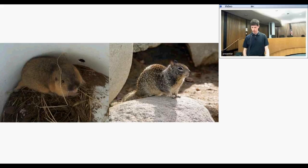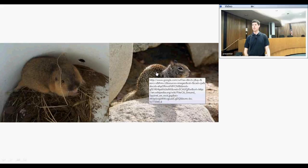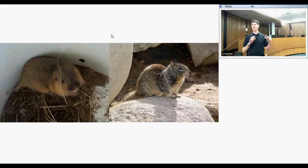Two species that the California tiger salamander simply can't live without: if you look at the forelimbs of the salamander, you'll see they're not modified in any way for digging. So they are using burrows created either by Botta's pocket gopher or the California ground squirrel. If you don't have one of these two species present in the landscape, then the California tiger salamander population can't persist.